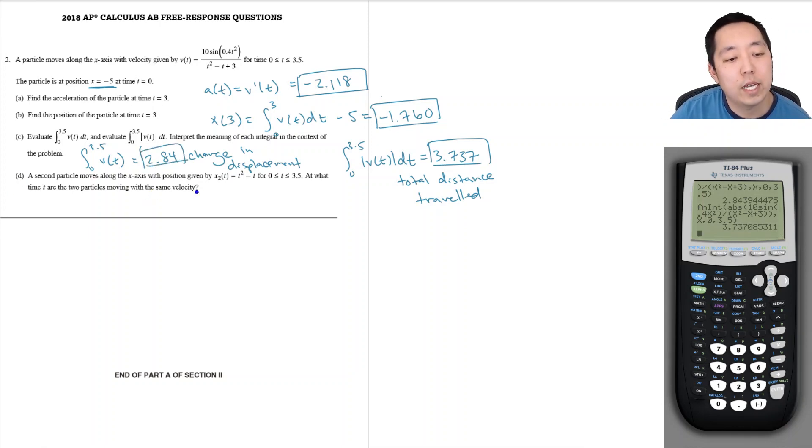Second particle moves along the x-axis with position given by that. At what time are the two particles moving with the same velocity? Well, the velocity of this guy is the derivative. So that's 2t minus 1. I want to know when is that equal to 10 sin .4t squared over t squared minus t plus 3.